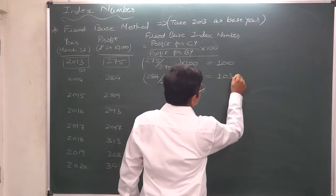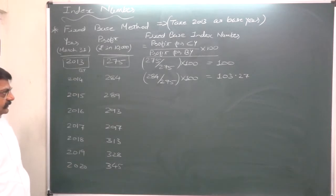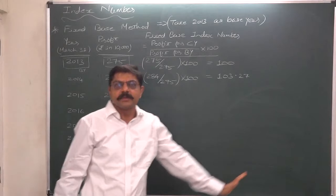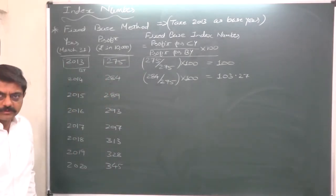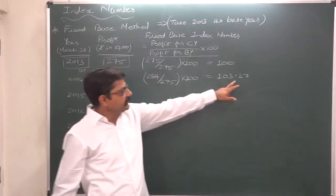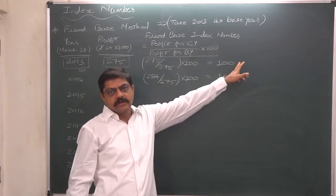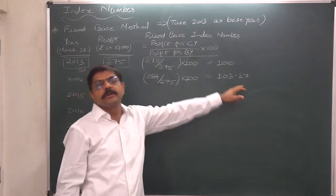So in 2014, the profit increased by 3.27% as compared to 2013. This can be the conclusion on the basis of this index number. If profit we made in 2013 was 100, in 2014 it is 103.27.